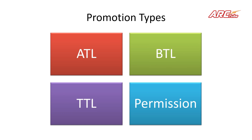Promotional types include ATL (Above the Line), BTL (Below the Line), TTL (Through the Line), and Permission marketing. ATL refers to advertising placed in paid-for media such as print — newspapers and magazines — radio, TV, cinema, and outdoor or transport poster sites. 'The line' refers to the line in an advertising agency's accounts; the figure above it represents commission from buying media space for clients.